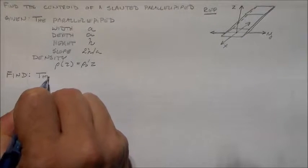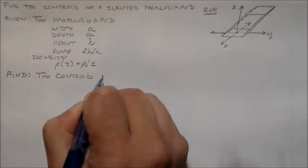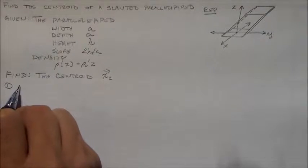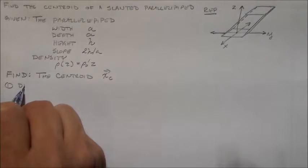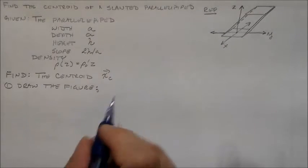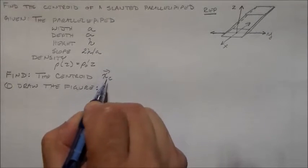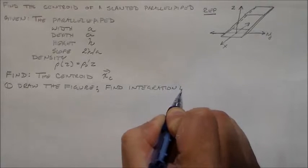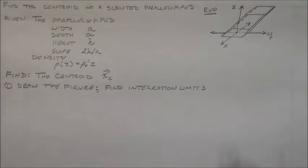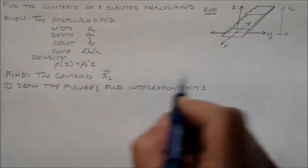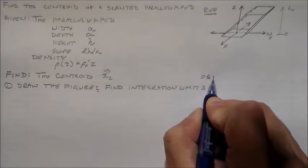So I want to find the centroid — I'll call it xc. The first thing you want to do is draw the figure, which I already drew, and then figure out the integration limits. So we know we want z to be between 0 and h: zero is less than or equal to z, is less than or equal to h.